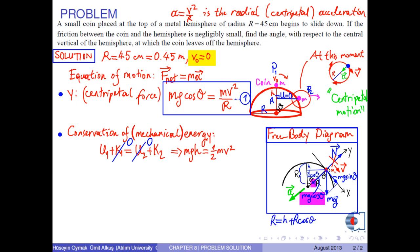From the figure, we can find an expression for H as R times 1 minus cosine theta. From equation 1, we have an expression for M times V squared as M times R times G times cosine theta.